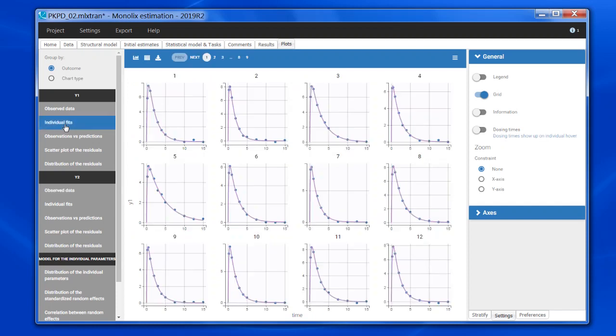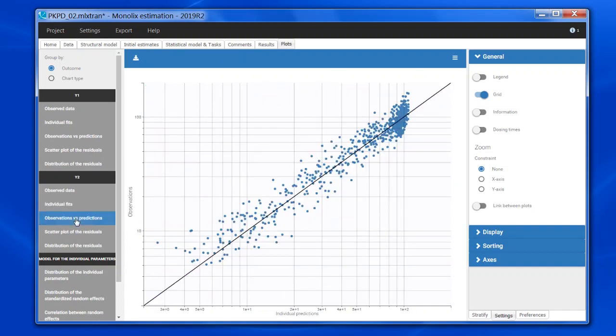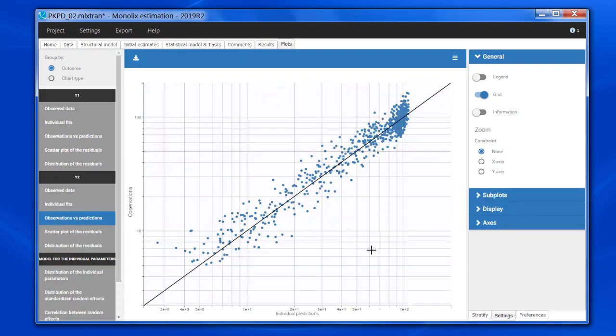I have used an indirect model from the library to fit the data. If I look at the individual fits, they are good both for the PK and for the PD. And if I look at the obs versus pred, this is what I see first. That's the obs versus pred with the observations only. And I can see that the dots are evenly distributed around the black line.